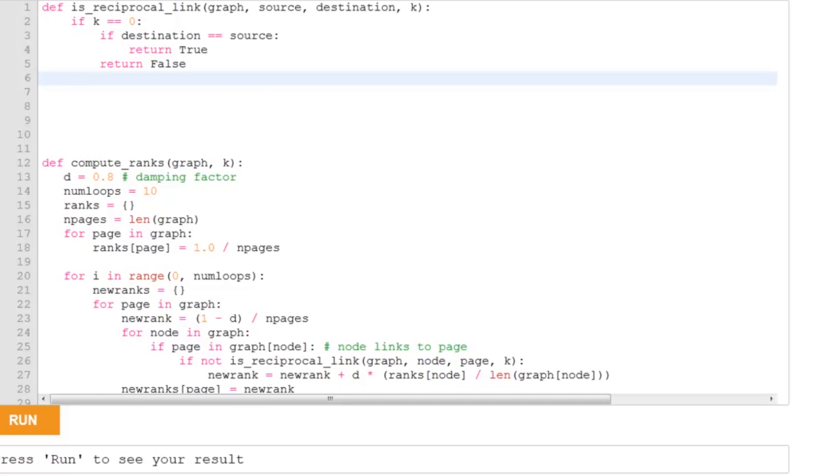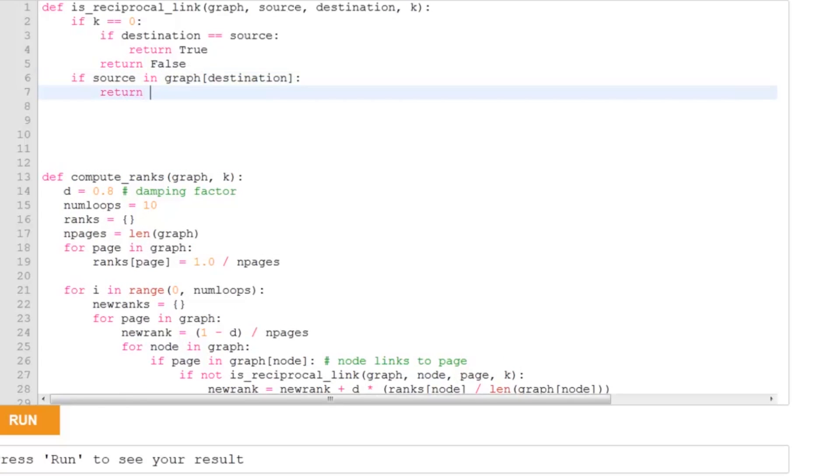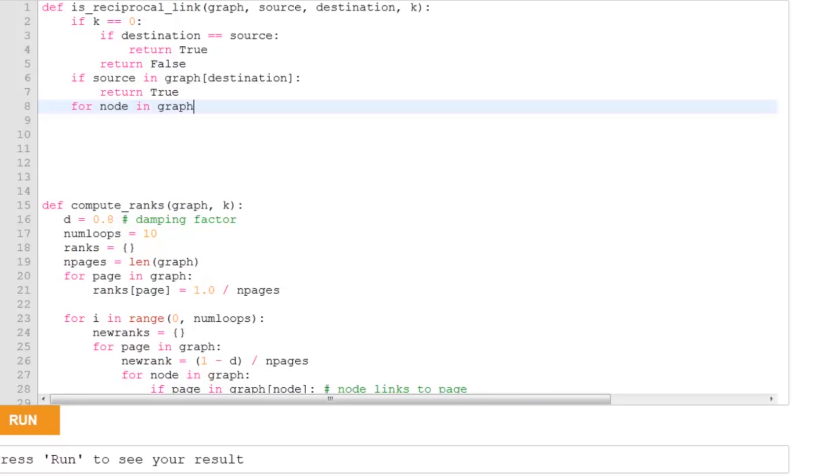If K is not equal to zero, then it's at least one, which means if there's a direct link from the destination to the source, then there's most definitely a reciprocal link. And if that's not the case,